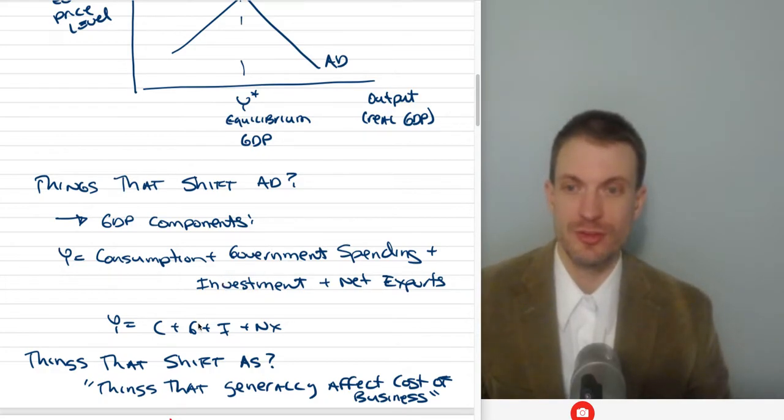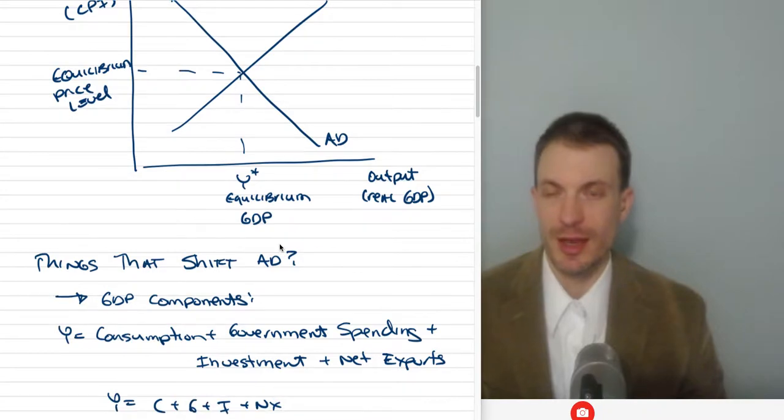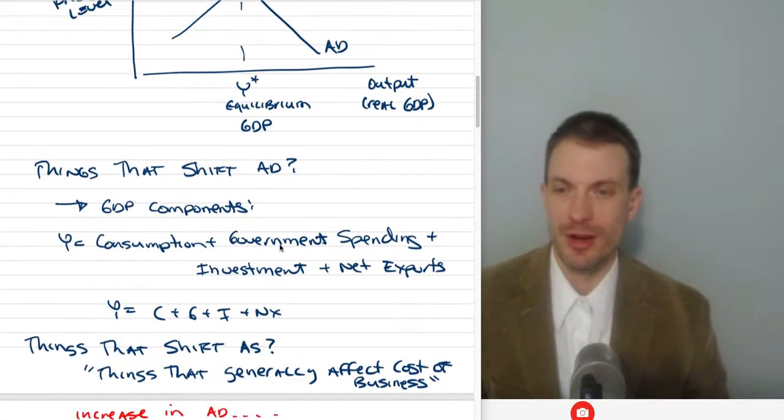Think about fiscal policy. If the government raises tax rates, that would decrease consumption, maybe decrease investment. If it's on business, less disposable income, that would shift aggregate demand to the left. If the government increases government spending, that would directly affect G, shifting aggregate demand to the right. Then we'd be interested in what happens to the crossing point, what happens to quantity in the new equilibrium.